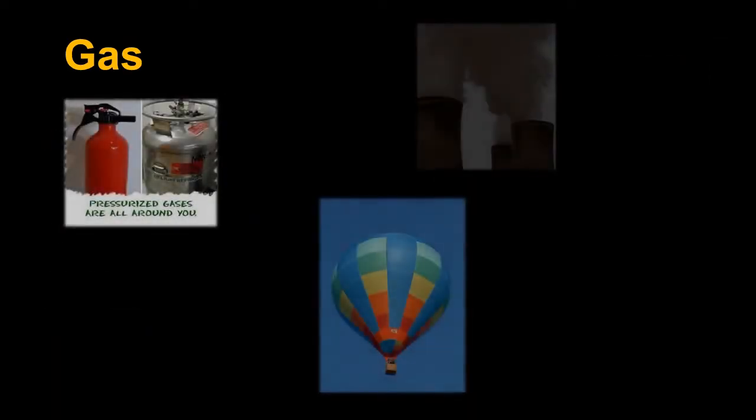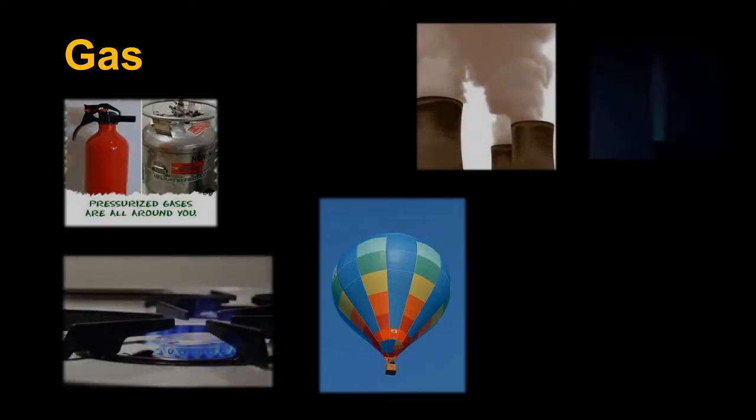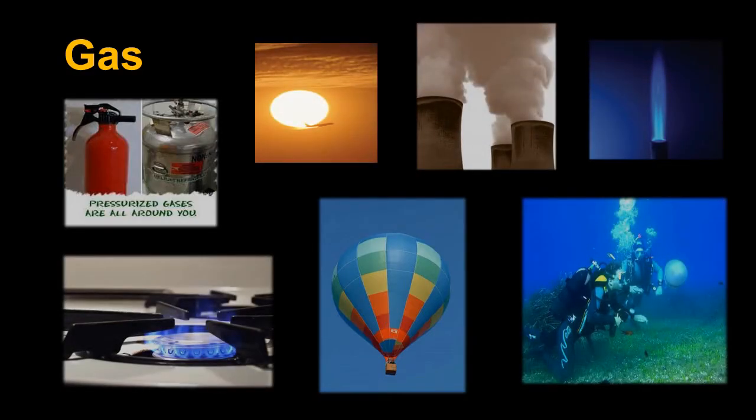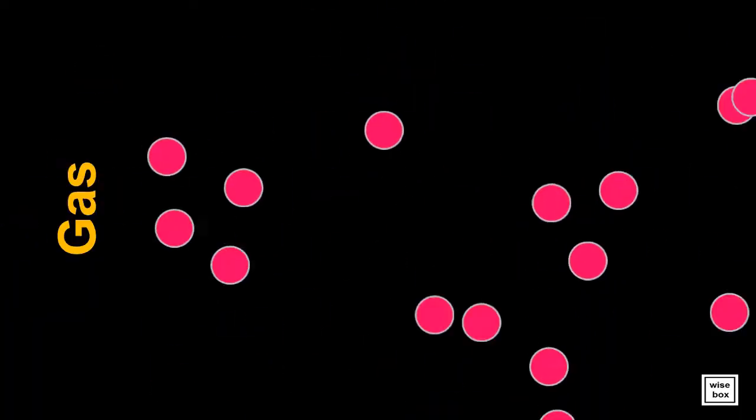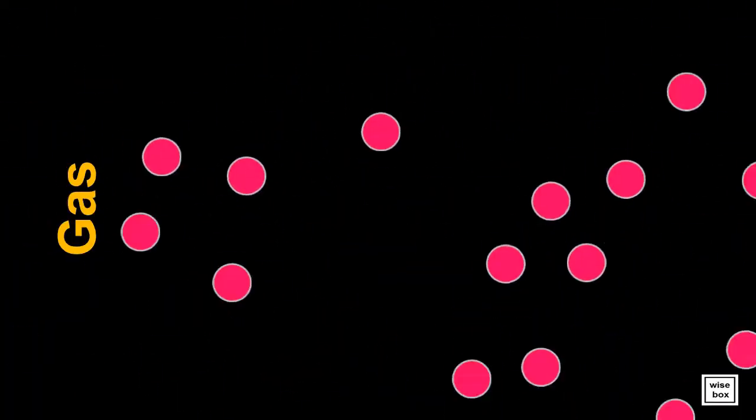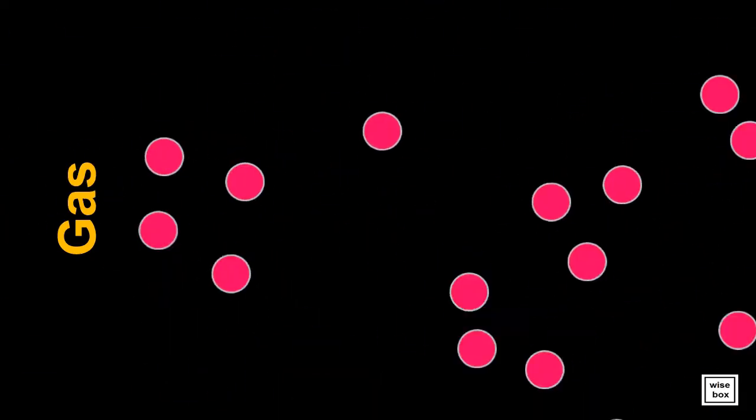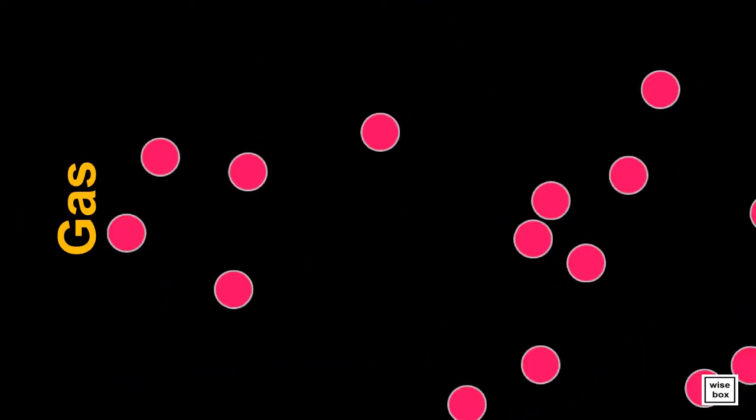Here are some examples of gas substances. Here is an illustration showing how far apart the particles of gases are. It also shows the fast movement of the gas particles.